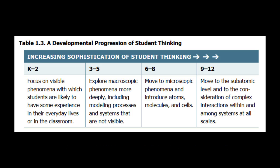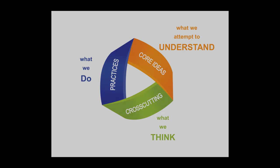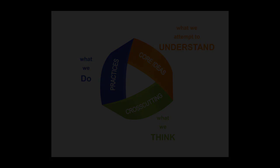Let's now look at a description of what we call the three dimensions of an NGSS performance expectation, or PE. Namely, the science and engineering practices, or SEPs — always in blue; the disciplinary core ideas, or DCIs — always in orange; and the cross-cutting concepts — always in green.